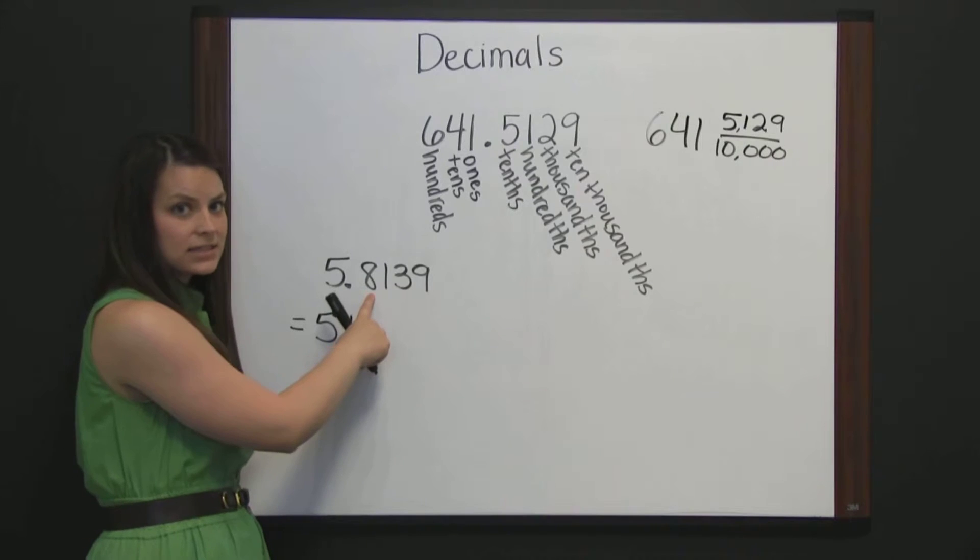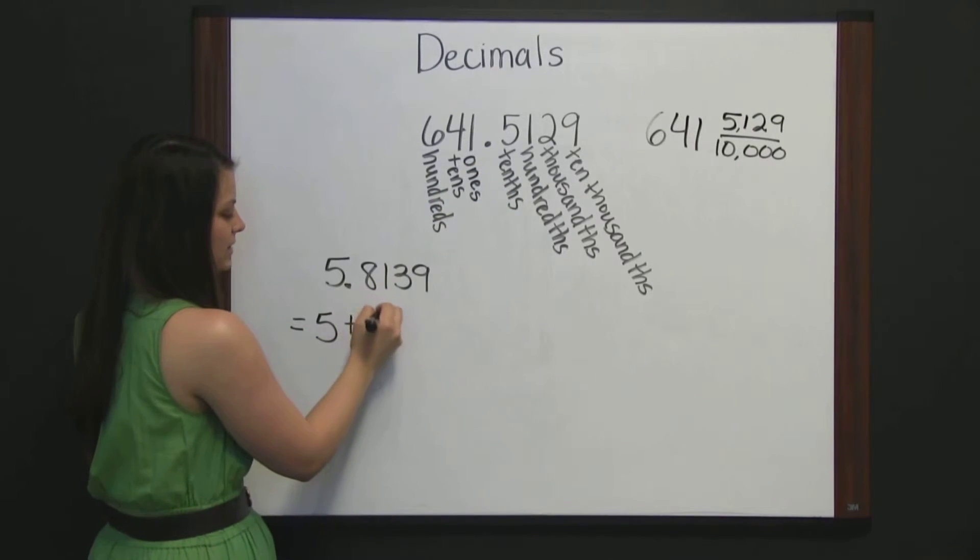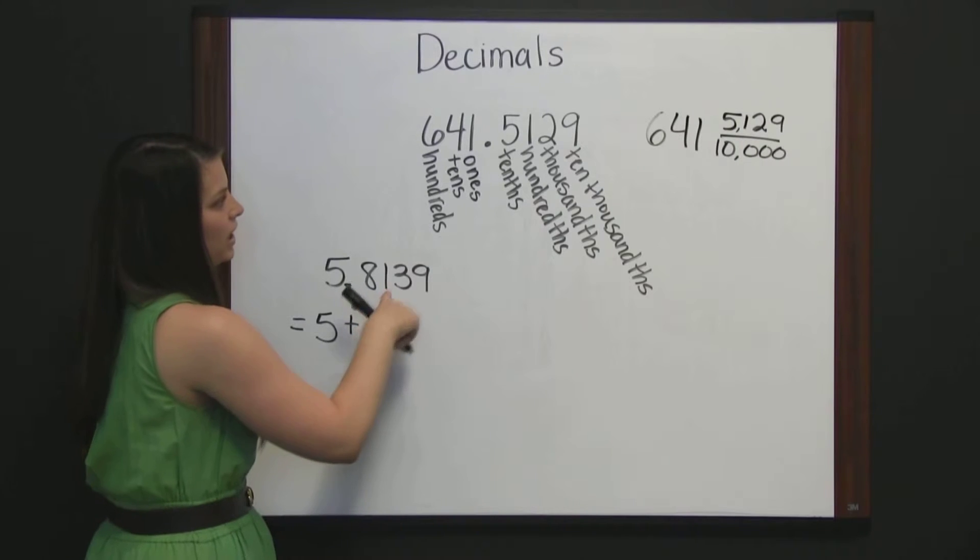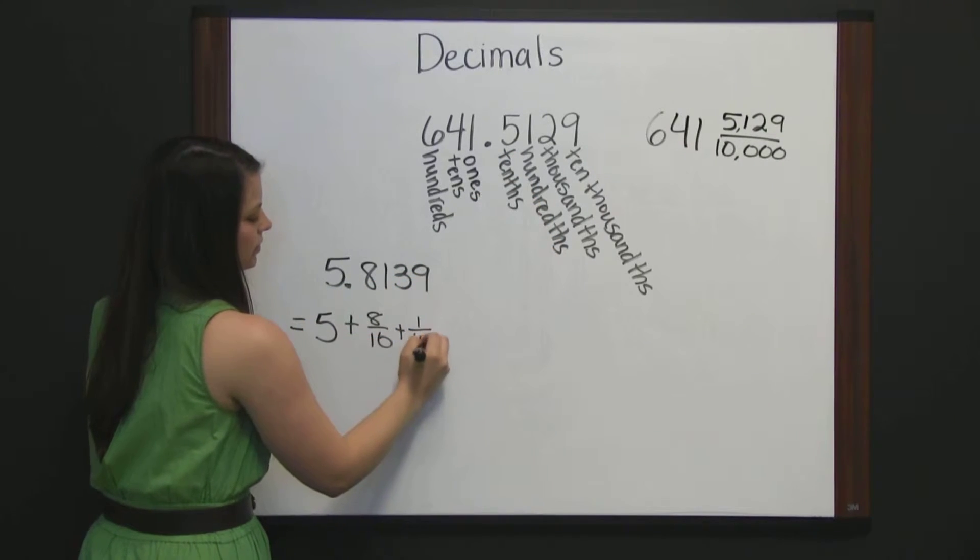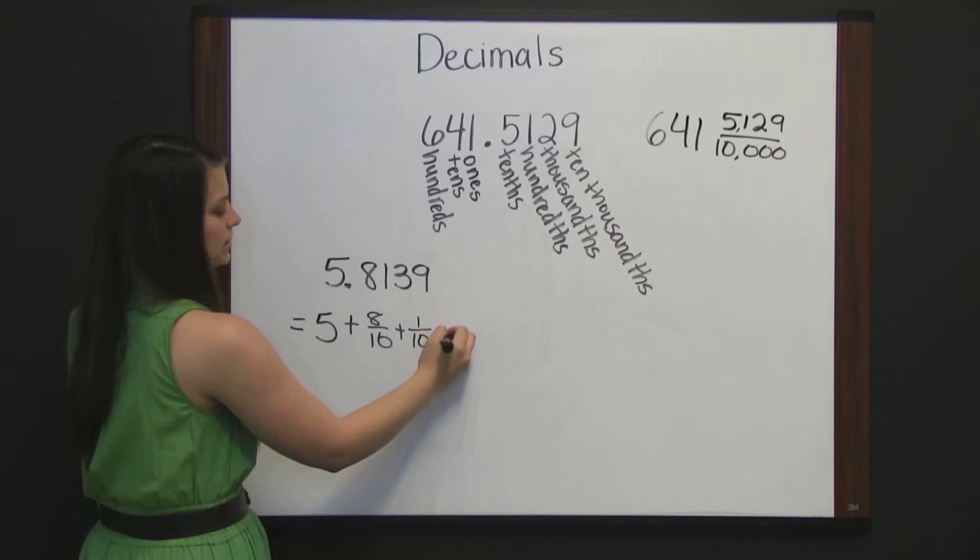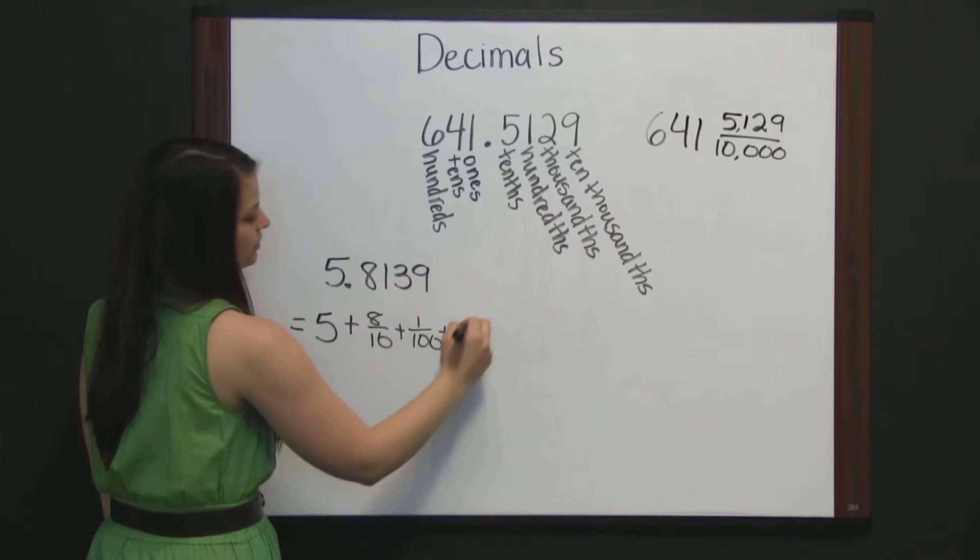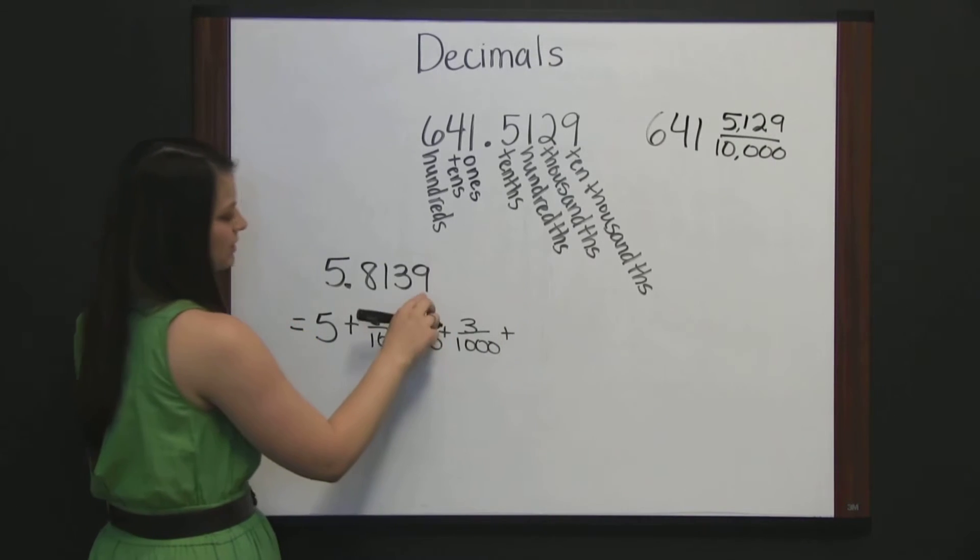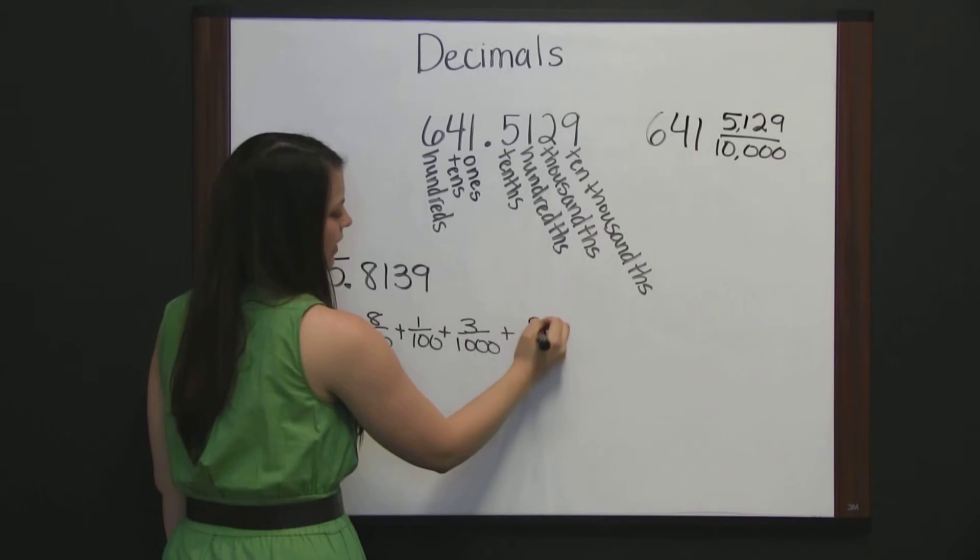would be eight tenths, since it's in the tenths place, plus one hundredths, plus three thousandths, plus nine ten thousandths,